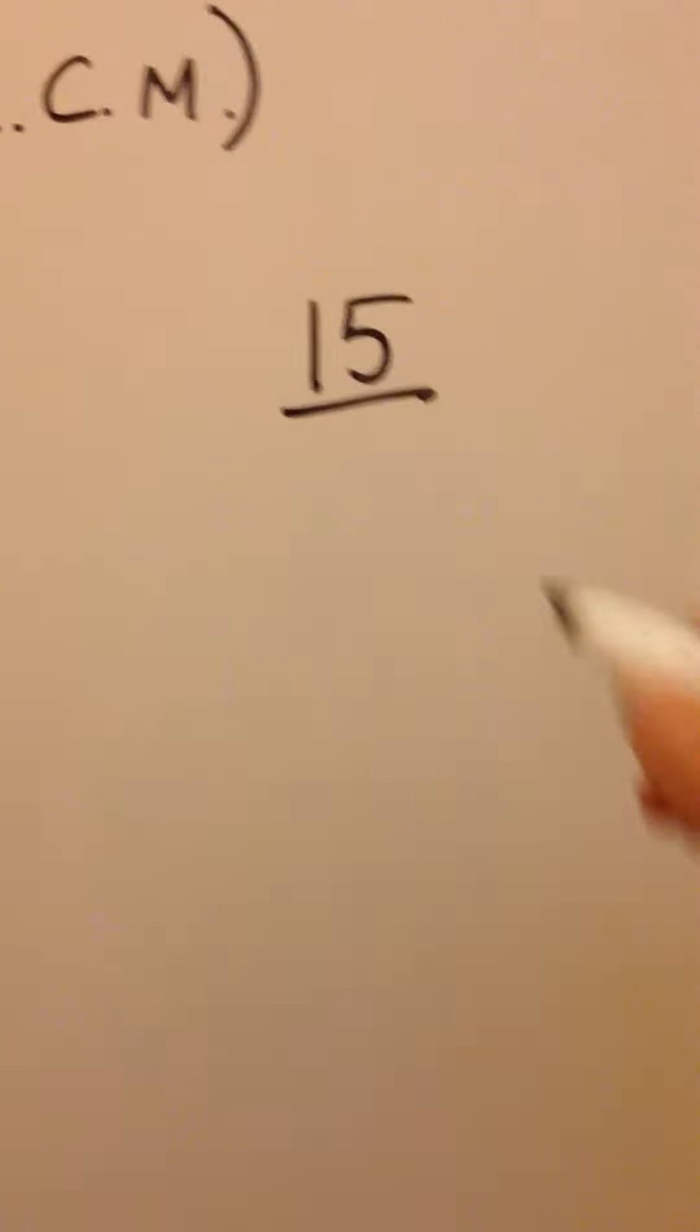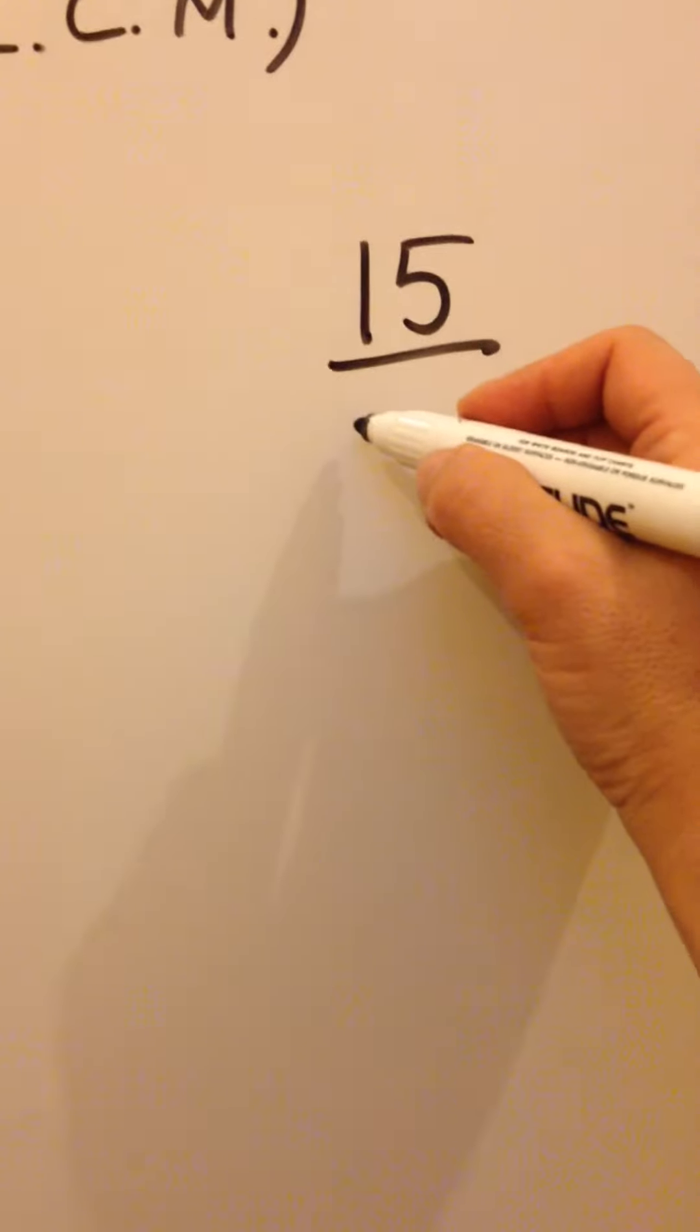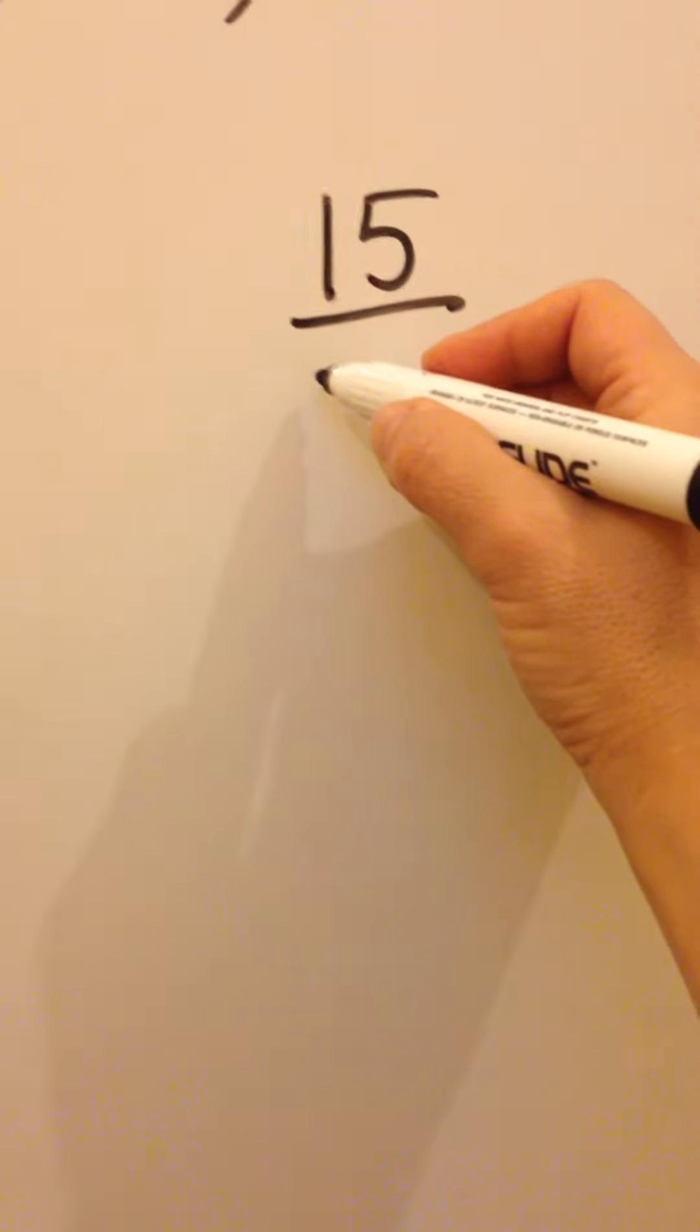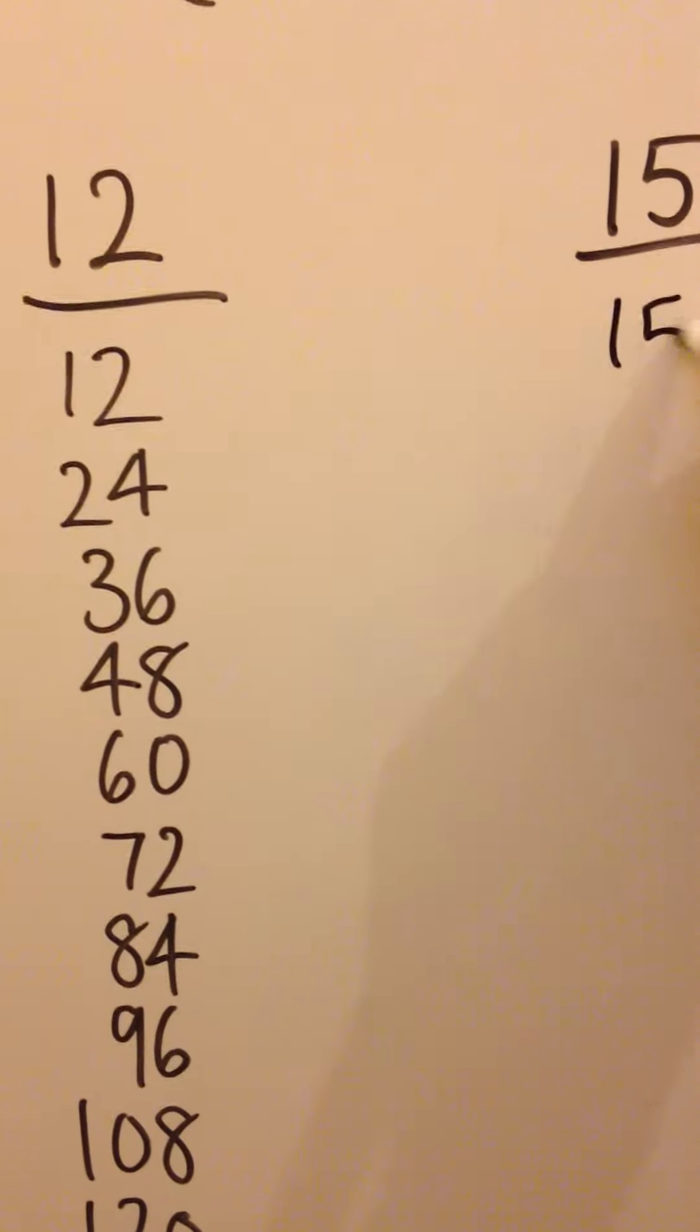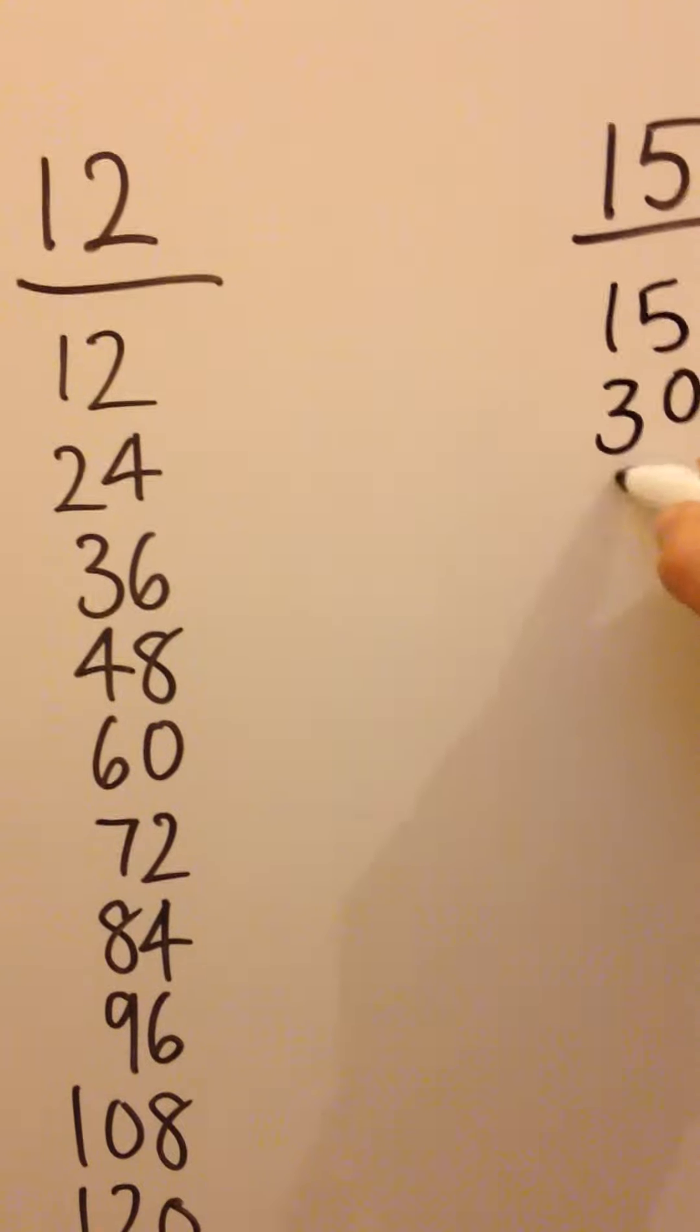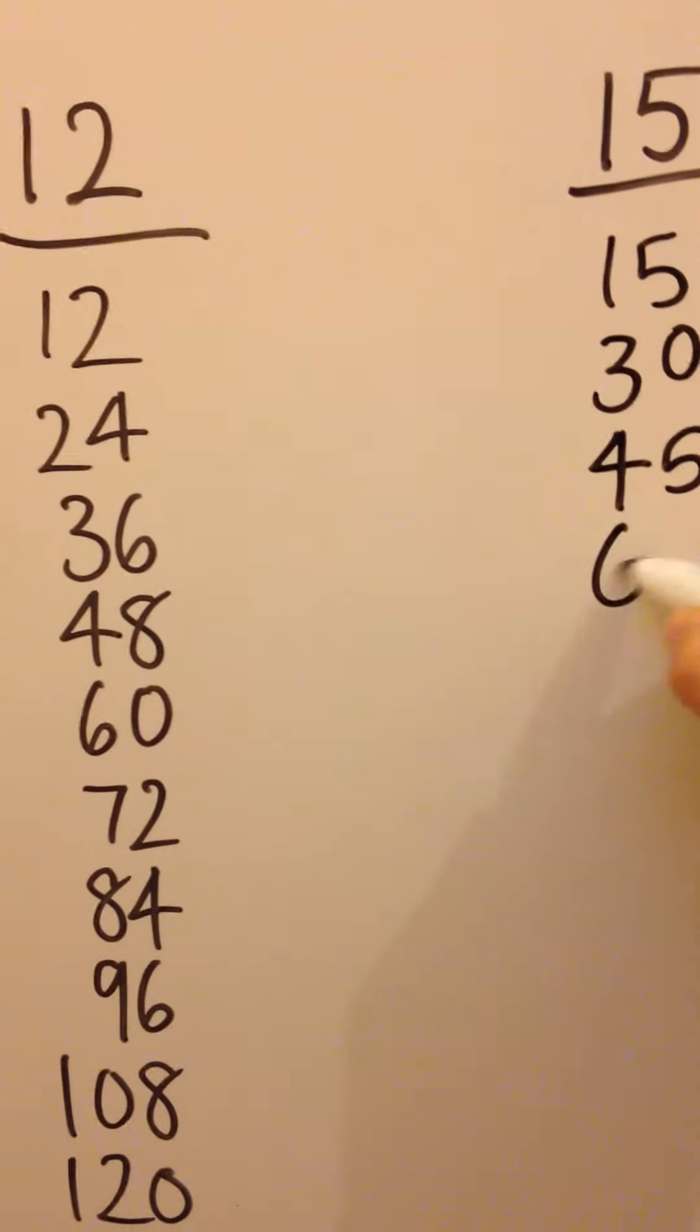Doing a similar task with 15, I'm going to start writing and I'm going to stop when I get to a number which is already in the 12s. So 15, 30, 45, 60.